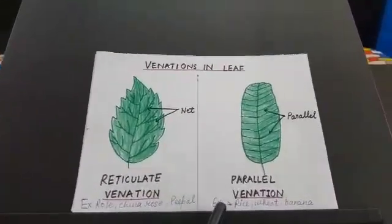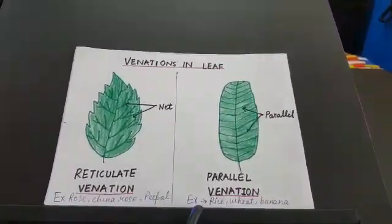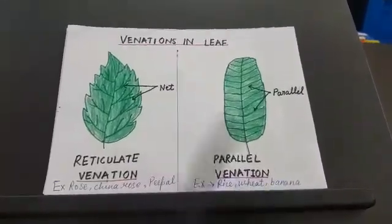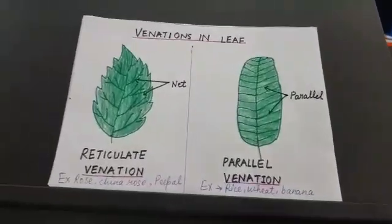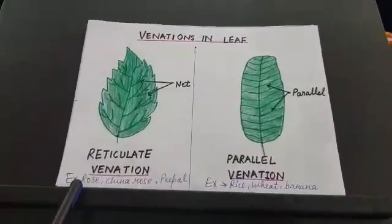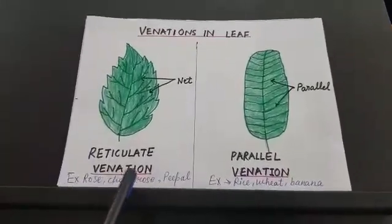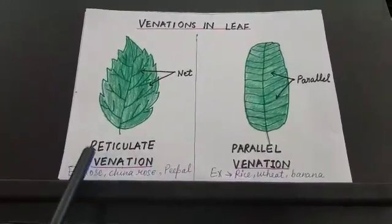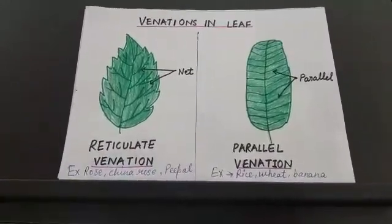Parallel venation can be seen in rice, wheat and banana. In case of rose, china rose, and peepal, we see reticulate venation.